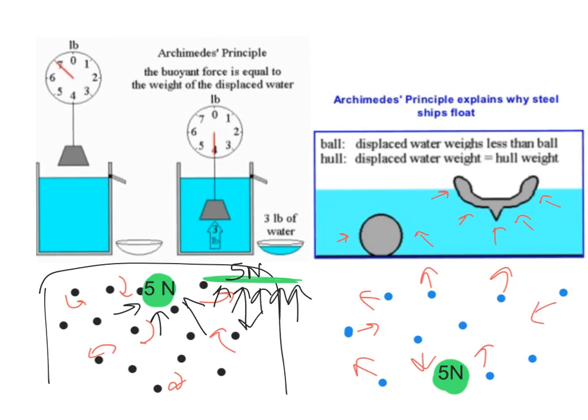So the buoyant force, according to Archimedes' principle, is equal to the amount of water that's pushed out of the way by the object. So now look at the pictures on the top here.